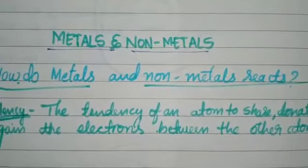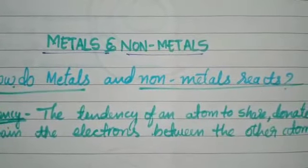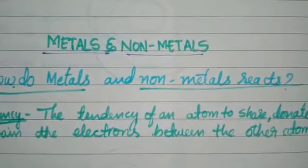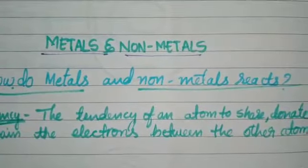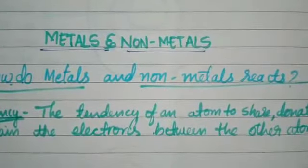What are valence electrons? The electrons present in the outermost shell — we call them valence electrons.